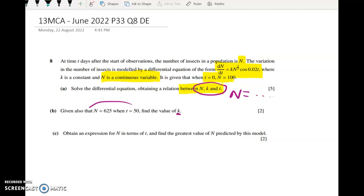Then we have to find the value of K using a second piece of information, which is that after 50 days there are 625 insects. And lastly we have to get an expression for N in terms of T. So this is where we do need to have N equals blah blah blah, and then we have to look at that and figure out the greatest value of N predicted by this model. Don't go too fast at that last two marks.